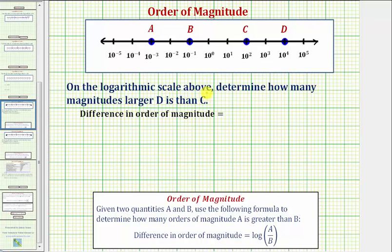On the log scale above, determine how many magnitudes larger the value of d is than the value of c. Notice how the value of d is ten to the fourth and the value of c is ten to the second.